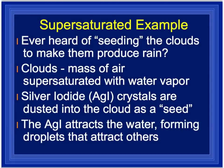An interesting example of a supersaturated solution is cloud seeding to make rain — and this is real, especially here in Nevada. Clouds are masses of air supersaturated with water vapor. Silver iodide crystals are dusted into the clouds with a plane, which is the seeding. The silver iodide attracts water, forming droplets that attract others, causing condensation that helps it rain more often.